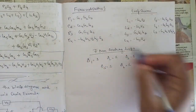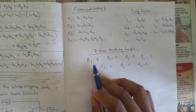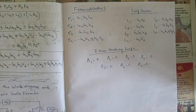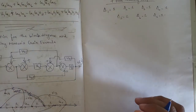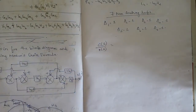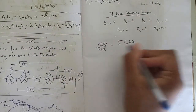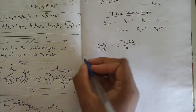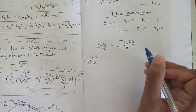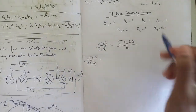Similarly for the loop gains: by examining the loops we have identified 7 loop gains. After that we have 7 non-touching loop combinations, and all the delta values (Δ₁ through Δ₇) are equal to 1. Now we apply Mason's gain formula to find C(s)/R(s), which is the summation of Pₖ·Δₖ divided by Δ.